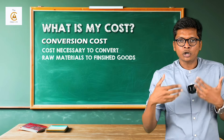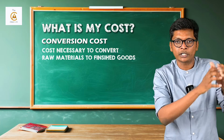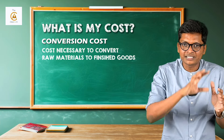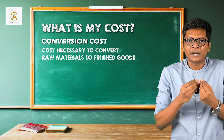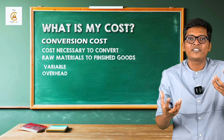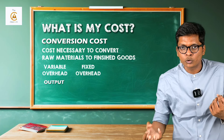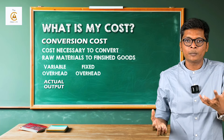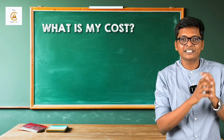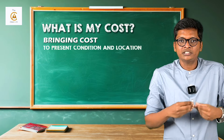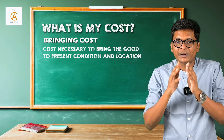Purchase price does not include trade discount, and also does not include taxes paid for which input tax credit is available. Second is the conversion cost — cost necessary to convert the raw materials to finished goods. For example, Maza making juice: the cost needed for converting those mangoes into the final product, juice in a bottle — all this is involved in conversion cost.